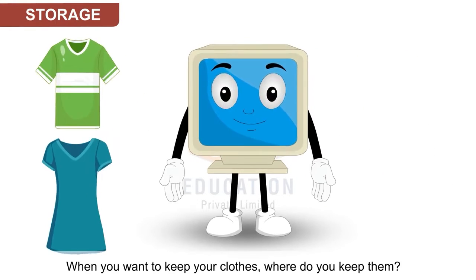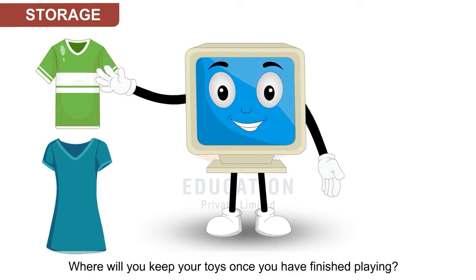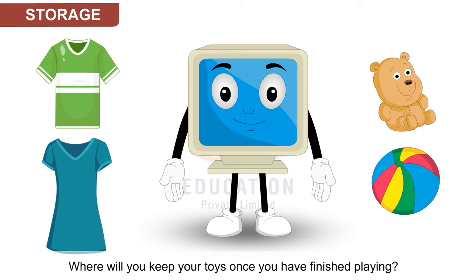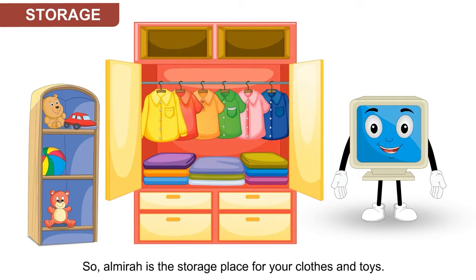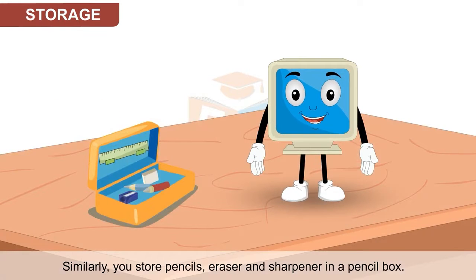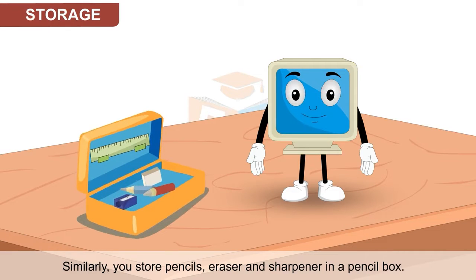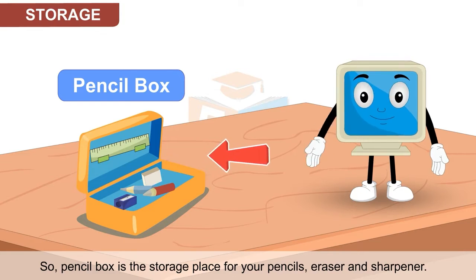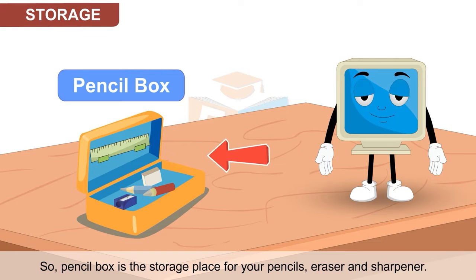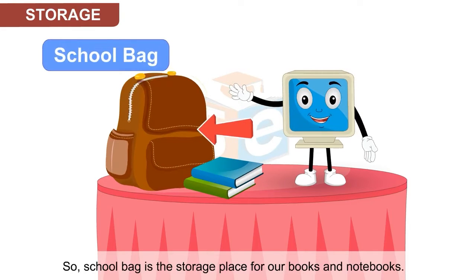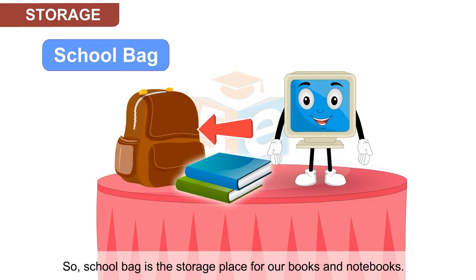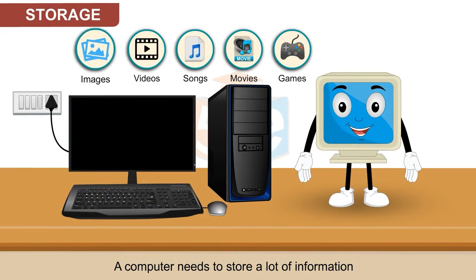When you want to keep your clothes, where do you keep them? Or where will you keep your toys once you have finished playing? You use an almira or cupboard for storing your clothes and toys to keep them safe. So almira is the storage place for your clothes and toys. Similarly, you store pencils, eraser and sharpener in a pencil box. So pencil box is the storage place for your pencils, eraser and sharpener. You carry your books in your school bag, so school bag is the storage place for our books and notebooks.